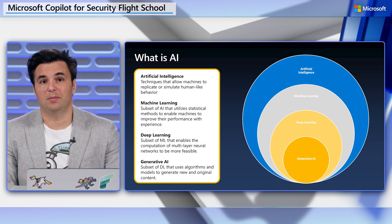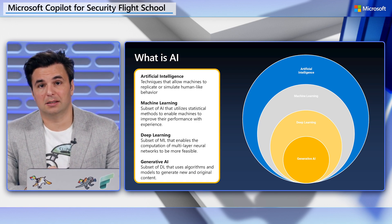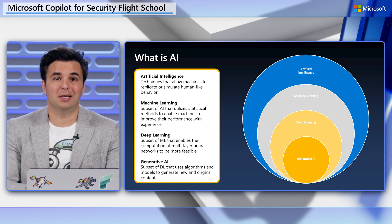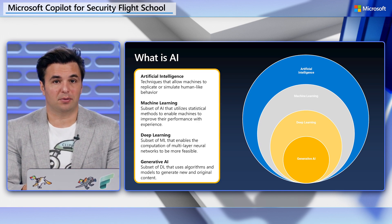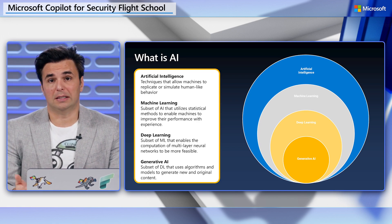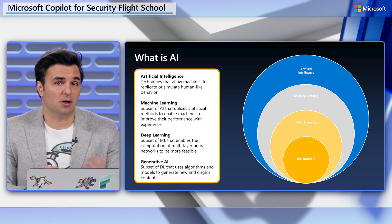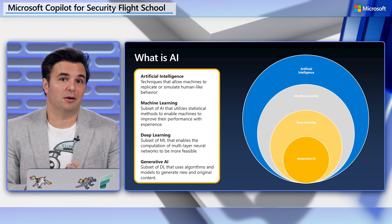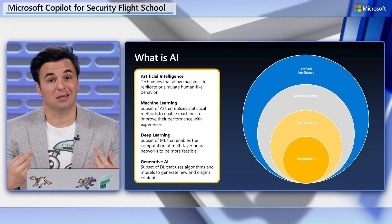Let's start with an example to help explain some underlying elements. As humans, understanding our world is predicated upon how we process, learn from, and retain data. Computer systems are the same way, but traditionally haven't been able to do that without human help and a lot of data science. This is especially true when it comes to large amounts of data from a multitude of sources — the fundamental challenge in cybersecurity.